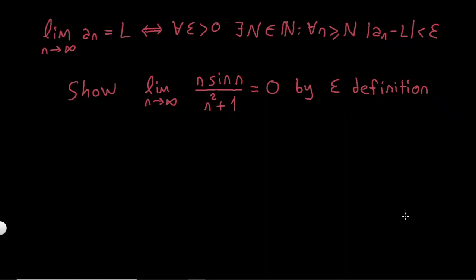In this video I will show you how to use the epsilon definition to show a limit. The definition is: the limit as n goes to infinity of aₙ equals l if and only if for all epsilon greater than 0.